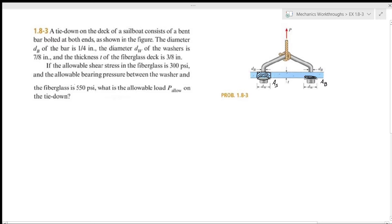Alright, let's write down our givens. We have db the diameter of the bar, dw the diameter of the washer, t which is the thickness of the fiberglass, and we have our allowable shear stress and allowable bearing pressure. And then we are trying to find p_allow.